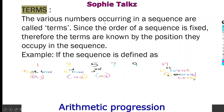The various numbers occurring in a sequence are called terms. Since the order of a sequence is fixed, the terms are known by the position they occupy in the sequence. That's why we refer to the 1st term as A1, 2nd term as A2, 3rd term as A3, up to the nth term — the general term — denoted An. This allows us to ask for the 100th term or 200th term.